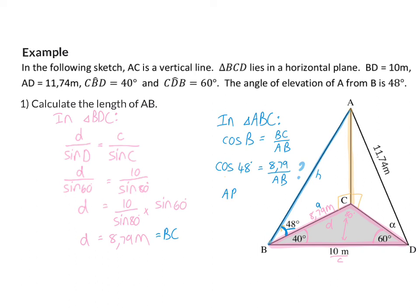And now we need to multiply with the AB on the left, and then divide by cos of 48 on the right, and then we'll have AB as 13.14 meters.